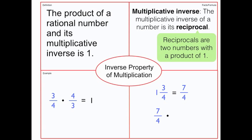From here, we can multiply by its reciprocal, which is four-sevenths. So, the reciprocal for one and three-fourths is actually four-sevenths, which will give you one.